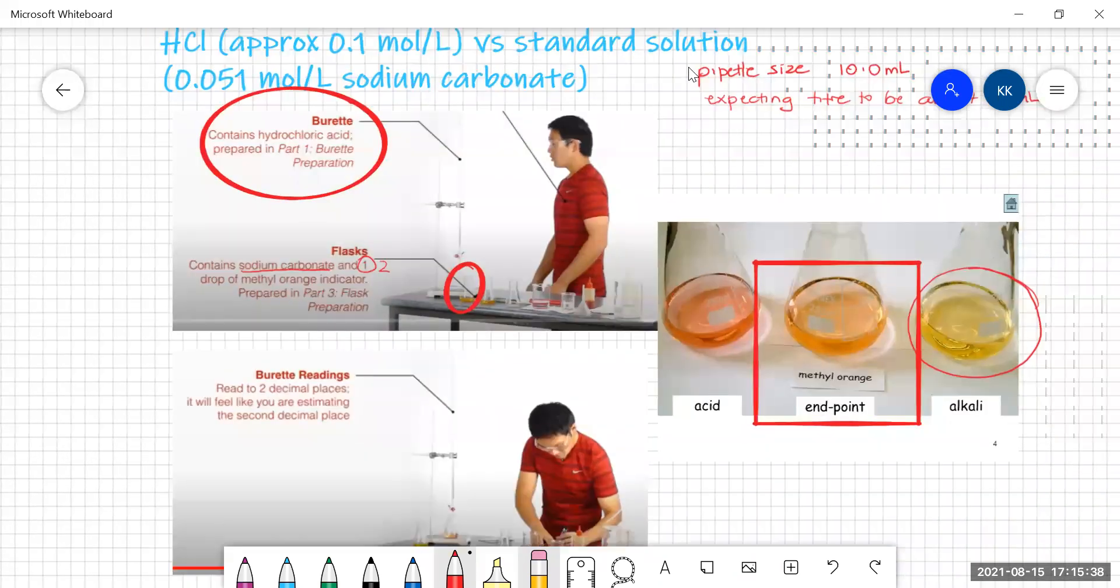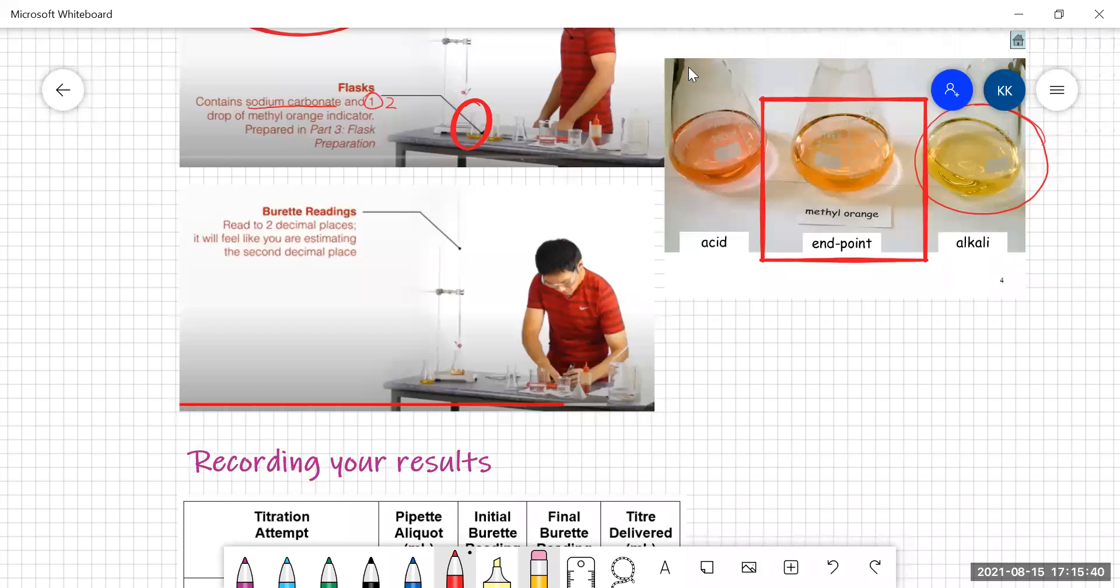Reading the burette, you read the burette to two decimal places. That is going to look like you're estimating the second decimal place and you are. The main thing you really need to know is whether or not that burette reading is going to round up or down. So you really need to know if it's more than 0.5 or less than 0.5.